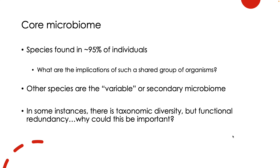Other species found in fewer individuals — more unique to who you are as an individual — can sometimes be called the variable microbiome or the secondary microbiome. When considering the core microbiome, we may see taxonomic diversity, meaning we have a number of different species. But within that taxonomic diversity, we have functional redundancy — meaning we may have many different species that can all perform the same function. I'd like you to speculate why having taxonomic diversity but functional redundancy could be important.